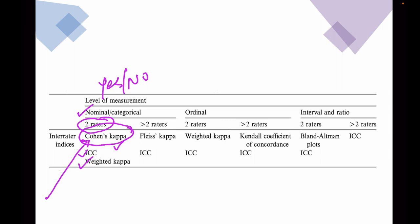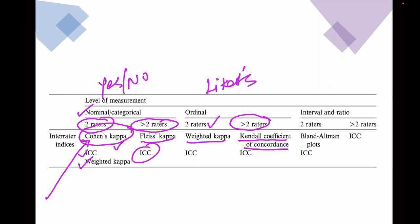When we are going with greater than two raters, we have to go with Fleiss' kappa or ICC. When dealing with an ordinal variable — for example, a Likert scale — with two raters, we go with weighted kappa. With more than two raters, we need Kendall's coefficient of concordance. For an interval or ratio variable between two raters, we use Bland-Altman's plot. For interval and ratio scale with greater than two raters, we use intra-class correlation coefficient. So we have seen various inter-rater reliability tests under various circumstances.